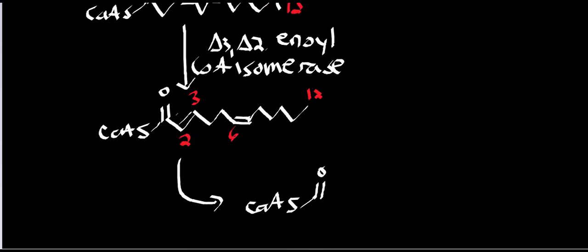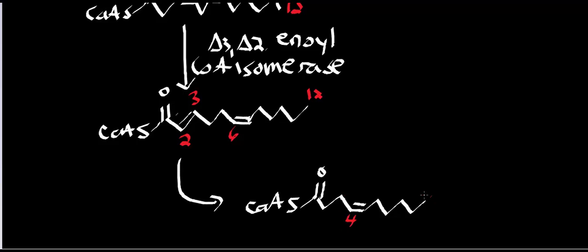Since we still do beta-oxidation, we shorten by two carbons, so the double bond at carbon 6 moves to carbon 4 — positions 1, 2, 3, 4, with carbon 10 at the end. We didn't generate an FADH2, but we did generate an NADH.